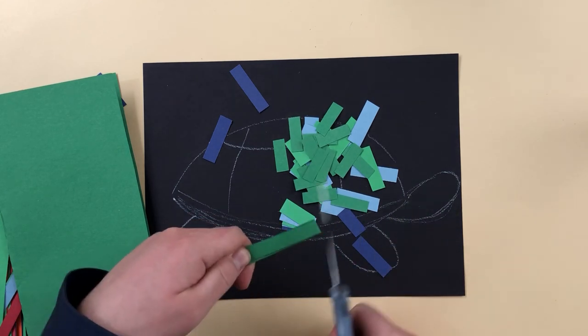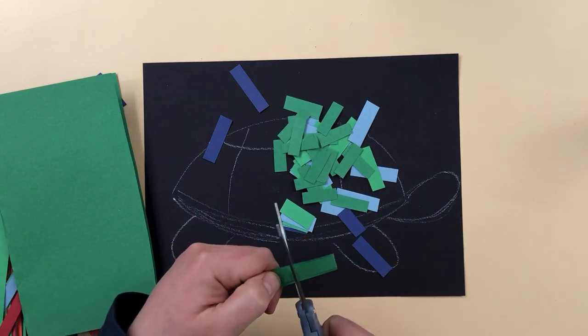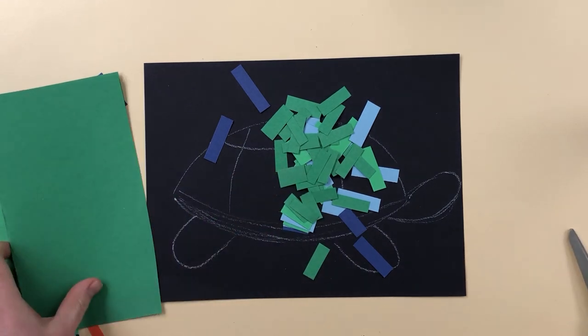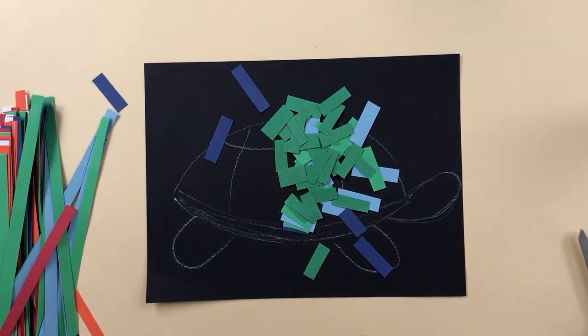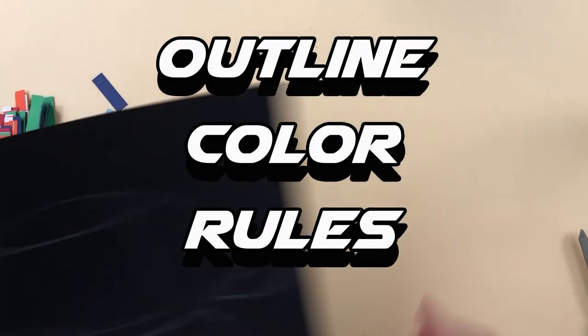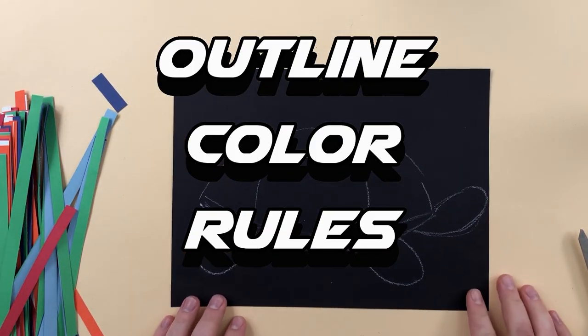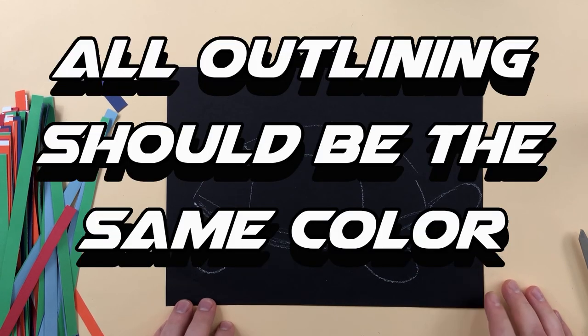Focusing on just one color at a time. First you want to figure out what is going to be your outline color. Some rules for outline colors. Basic rule is it all has to be the same.